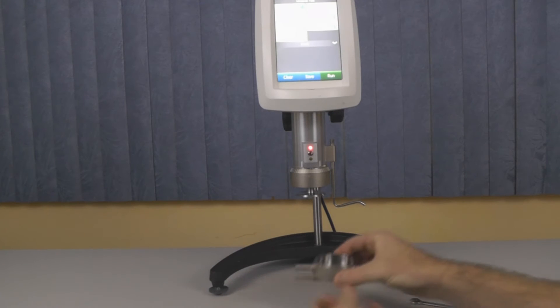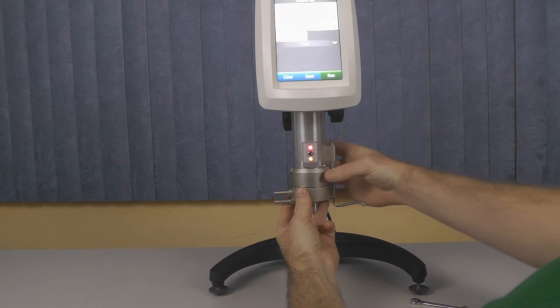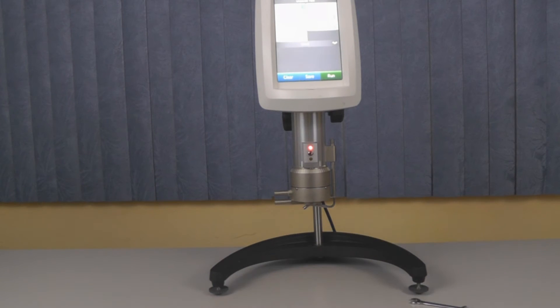If the yellow contact light appears, do not secure the tension bar. This means the spindle is already touching the sample cup and you must turn the micrometer clockwise until there is a space between the spindle and the cup. Once the spindle and cup lose contact, the yellow light will turn off.